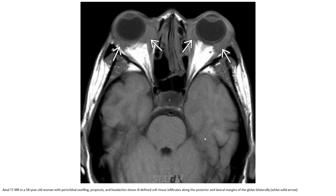The Axial T1 MR image shows diffuse thickening of the sclera predating a long posterior and lateral margin of the globe bilaterally. This is the case of sarcoidosis.